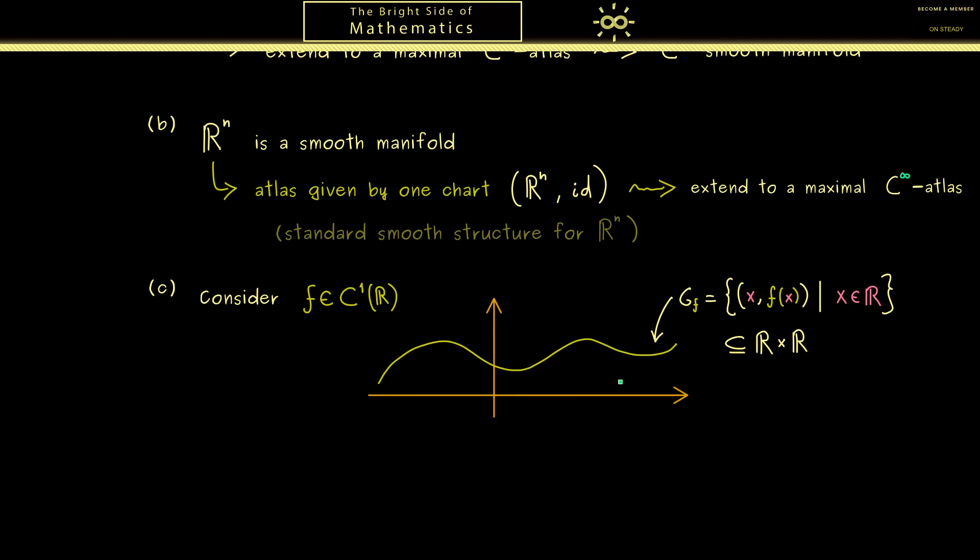However, here in our case we should recognize that we have indeed a manifold. More precisely, we can say G_f is a one-dimensional manifold. You see this immediately because we also only need one chart. More concretely, this would be h from G_f to R by simply sending this pair (x, f(x)) to the point x.